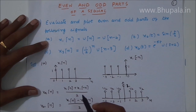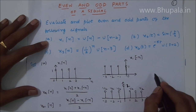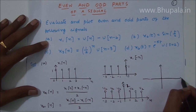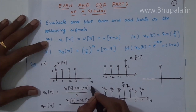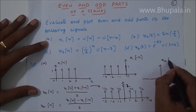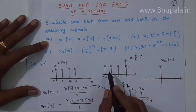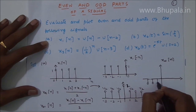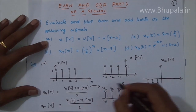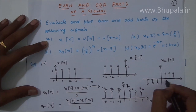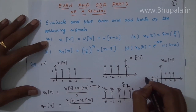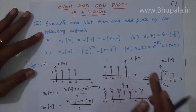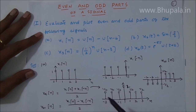Similarly, to plot the odd part, you subtract x1[-n] from x1[n] and divide by two. At minus 3, minus 2, and minus 1 the values are present. At the origin, one minus one equals zero. Beyond that, the values are one, one, one. After dividing by two, the positive-side amplitudes are one-half and the negative-side amplitudes are minus one-half. This is the odd part xo1[n], and we have now found both the even and odd parts of the signal.